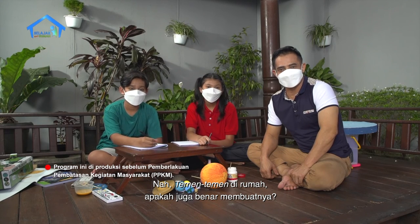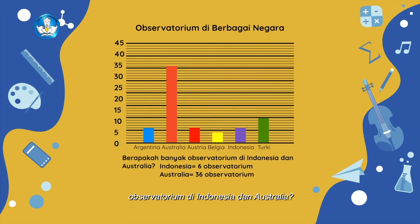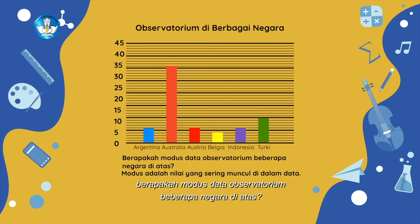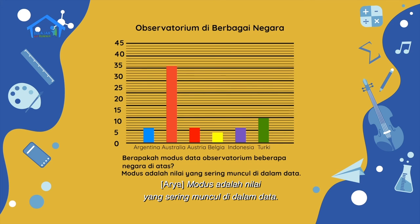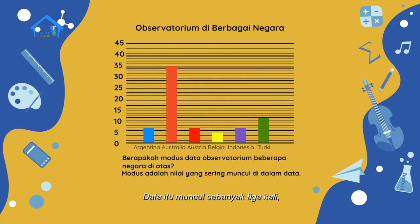Nah, teman-teman di rumah, apakah juga benar membuatnya? Pasti benar dong. Sekarang pertanyaan berikutnya: berapa banyakkah observatorium di Indonesia dan Australia? Indonesia memiliki enam observatorium, dan Australia memiliki 36 observatorium. Pertanyaan berikutnya: berapakah modus data observatorium beberapa negara di atas? Modus adalah nilai yang sering muncul di dalam data. Dari diagram kita bisa melihat bahwa nilai yang sering muncul adalah enam. Data itu muncul sebanyak tiga kali, yaitu di Argentina, Austria, dan Indonesia.